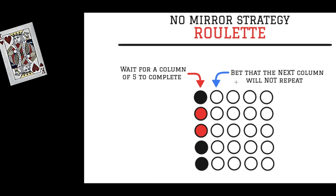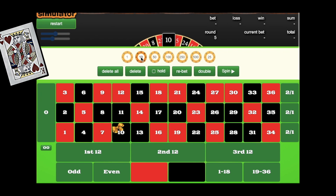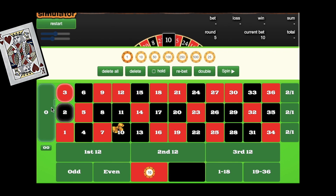Now we bet that the next column will not mirror the first column. Row one of column one was black, so we go with the no mirror and bet the opposite — our first bet will be red. Following our bet spread sequence, I will put $10 on red and $1 on zero.